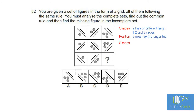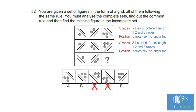Row two shapes: in each row we have two lines and the number of circles increases. We can eliminate C and D because the circles are next to the shorter line. The circles in the missing block must be above the longer line — we can eliminate A. The position of the lines in the first and third figures are identical. The correct answer is B.